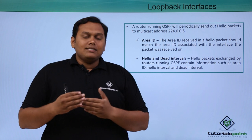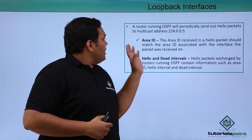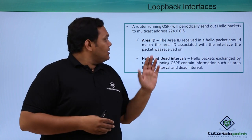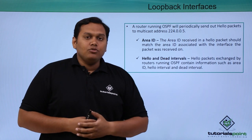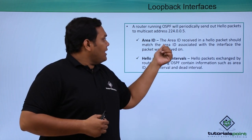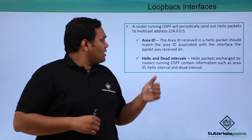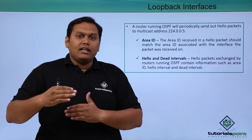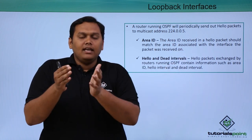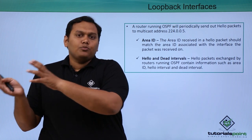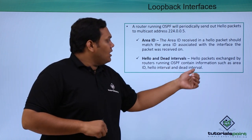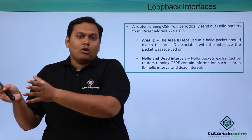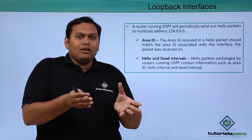A router running OSPF will periodically send hello packets to the multicast address 224.0.0.5. The area ID received in the hello packet should match the area ID associated with the interface of the router. Hello packets are exchanged between routers in the same area running OSPF protocol, and hello intervals and dead intervals are configured to manage this exchange.